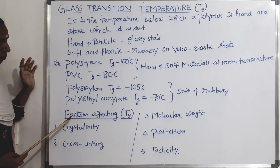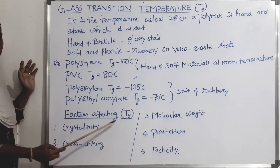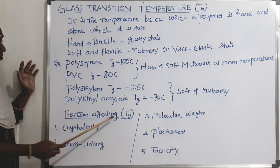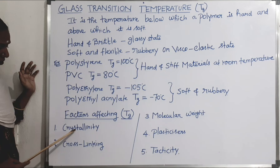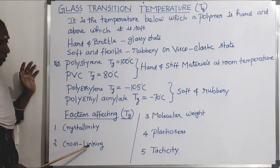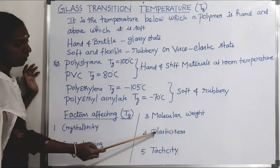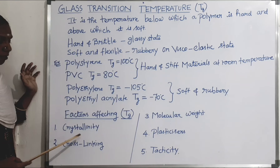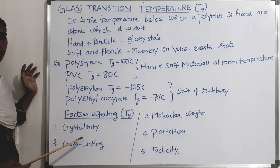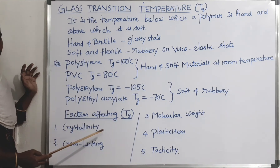Next, we will see the factors affecting the glass transition temperature. There are five factors: crystallinity, cross-linking, molecular weight, plasticizers, and tacticity. Based on the arrangement of polymer chains, we decide whether the Tg value increases or decreases.